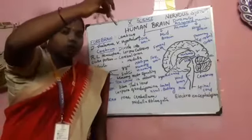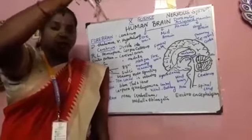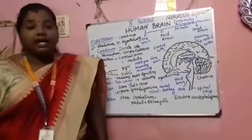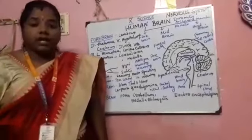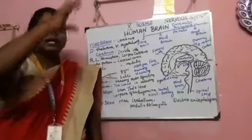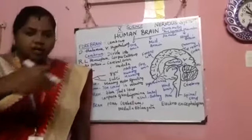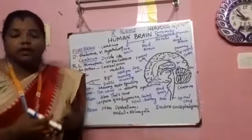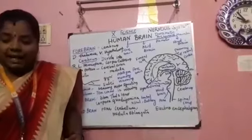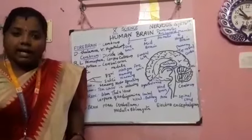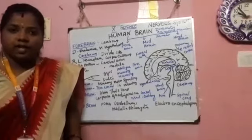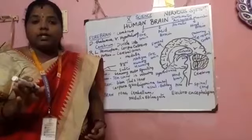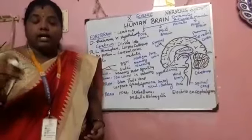Then again through the dendrite, it has been passed over into the cytone, then axon, and again at the terminal end. So here the transmission will be formed. Automatically, the impulse will be happening in it. At the end of the terminal end, the neurotransmitter will be formed.